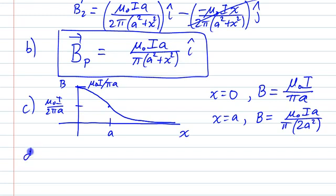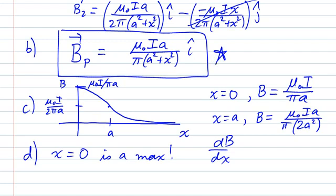In part D, we want to essentially look at where the maximum is. I think I can convince you that x equals 0 is a max. I could do a derivative, I could do dB/dx. I don't really need to do that though, because if you look at the expression for the magnetic field, any value of x that's non-zero is going to give you a smaller value. So the maximum value of the field is going to be when x is 0.